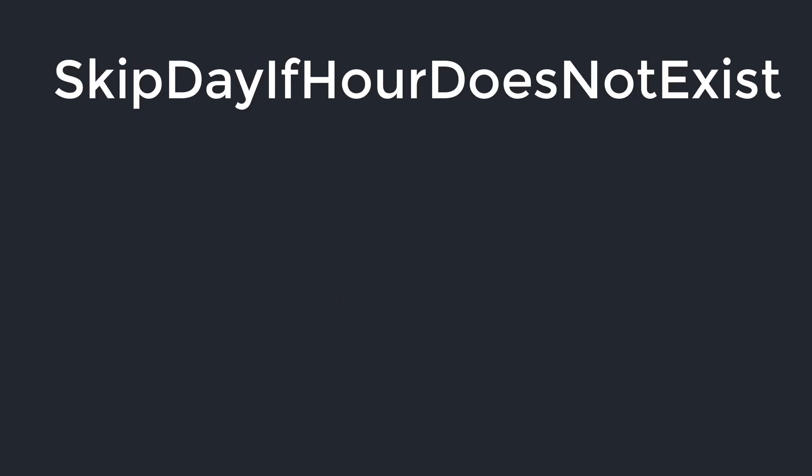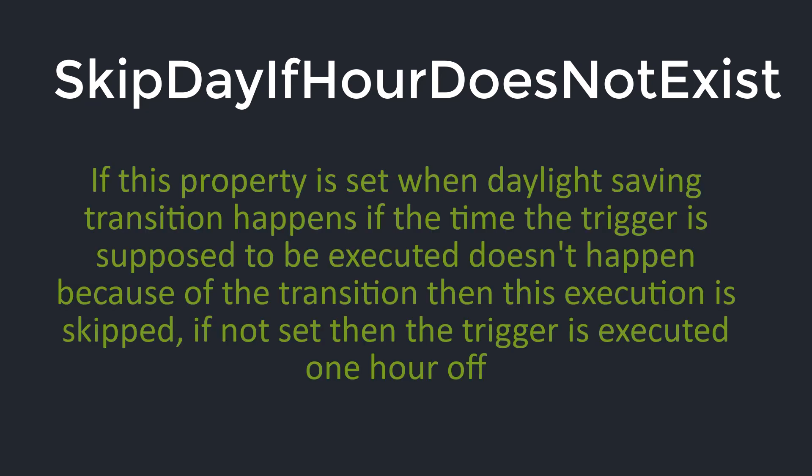Another important property is skip day if hour does not exist. If this property is set when daylight saving transition happens, and the time the trigger is supposed to be executed does not happen because of the transition, then this execution is skipped. If not set, then the trigger is executed 1 hour off.